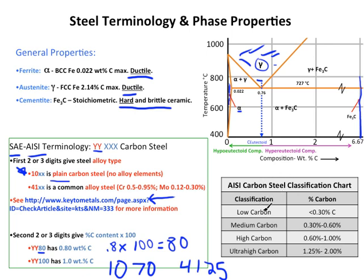Another way to classify steels is based on carbon content. Low carbon is less than 0.3 weight percent carbon. Medium carbon is 0.3 to 0.6 weight percent carbon. High carbon is 0.6 to 1 weight percent carbon. Ultra-high carbon is from 1.25 to 2 weight percent carbon. We classify steels this way to know what applications they are suited for.